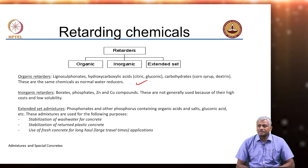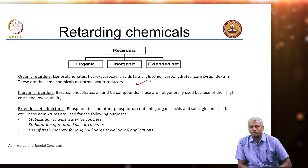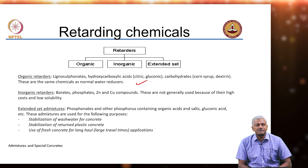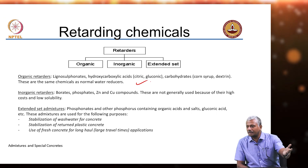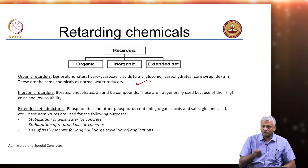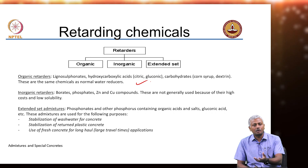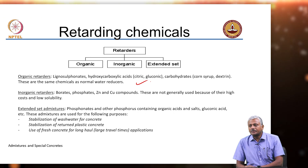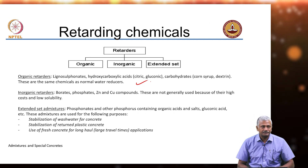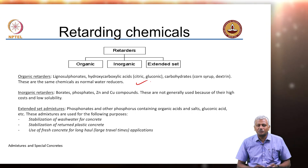These admixtures can be used for several reasons. One is stabilization of wash water for concrete. After the concrete truck delivers the concrete, it comes back to the plant and needs to be washed out. But this wash water is a high-pH material — concrete has a pH of 13 — so you cannot let that wash water mix with groundwater, although that happens all the time.